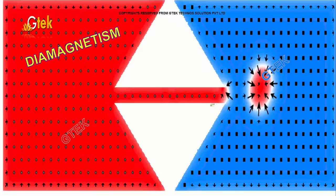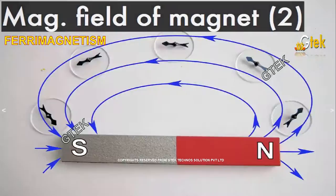Apart from that, diamagnetism—how the diamagnetism is happening and ferrimagnetism.